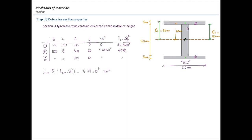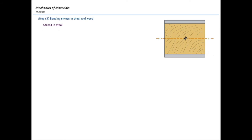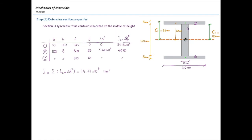Now let's determine the stresses produced by that unknown moment. First, I'm going to determine the stress in steel using sigma equal to MC over I — the well-known bending stress equation. This stress must be smaller than the allowable stress in steel, so M is unknown and I is calculated. The C value is the farthest distance of the steel material to the centroid. Since we are determining stress in steel, C1 is half the height of the entire section, which equals half the height of the wood plus the thickness of the steel plate, giving us 88 mm.